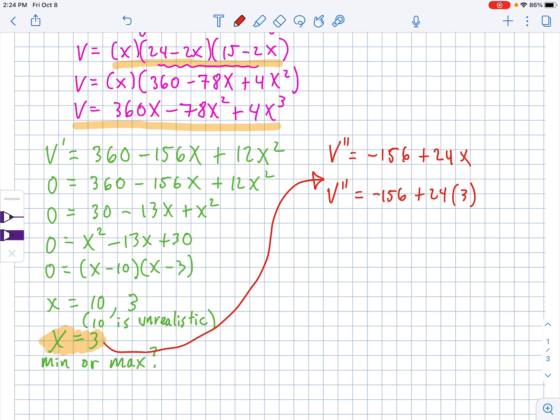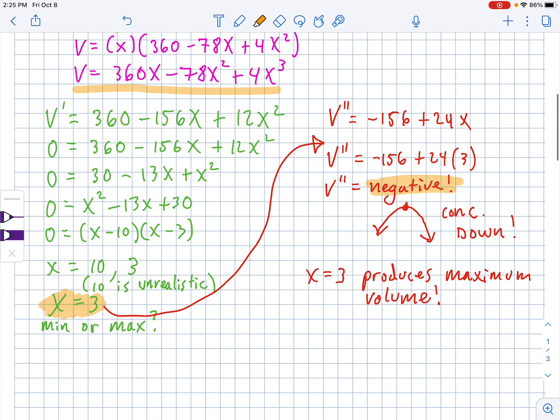Now we can feed our value into the second derivative. So negative 156 plus 24 times 3. And then 3 times 24 is 72. And you take away 156 and you get negative 84. So this is negative, which means that it's concave down, which means it is indeed a local maximum. So x equals 3 produces maximum volume.